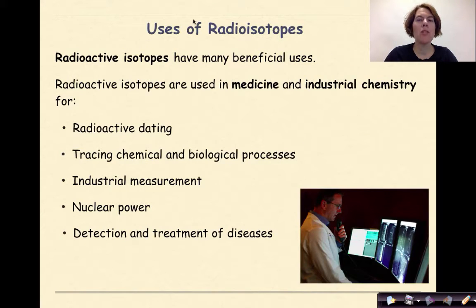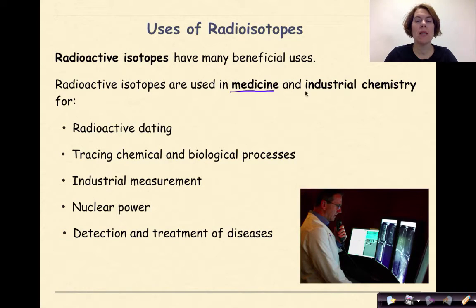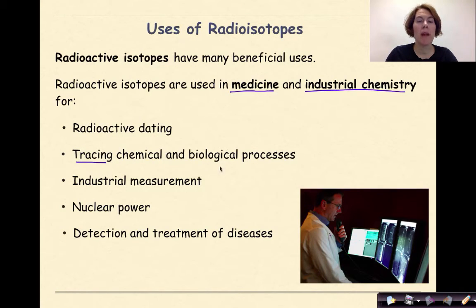Let's start off by talking about the uses of radioisotopes. Radioactive isotopes have many beneficial uses. They are used in medicine and in industrial chemistry — for radioactive dating, tracing chemical and biological processes, industrial measurement, nuclear power, and detection and treatment of diseases.